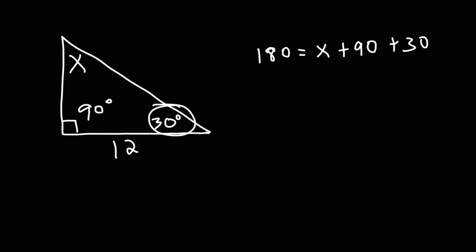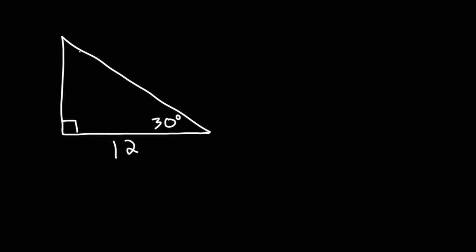Let's label everything. We'll replace X with 60 degrees and call this angle A, angle B is 60, and angle C is the right angle which is 90. Across angle C we have side C, which is the hypotenuse. Across angle B is side B, which is 12, and across angle A is side a, which we need to calculate.